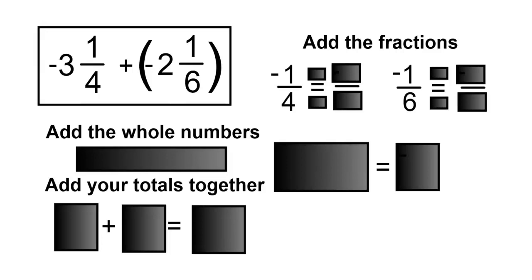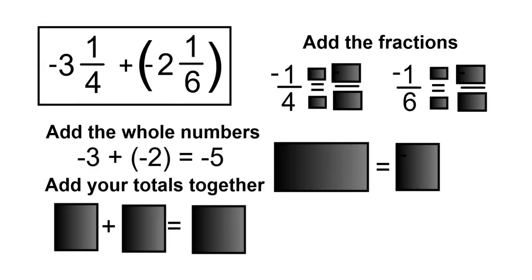Start by adding the whole numbers together. So negative 3 plus negative 2 is equal to negative 5.